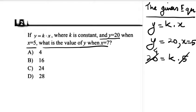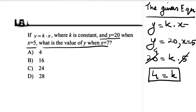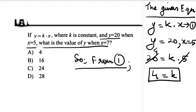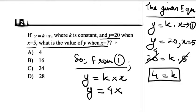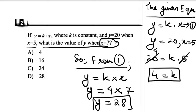5 times 4 is 20, so 4 is equal to k. Now we need to plug in this k value into the first equation. From equation 1: y is equal to k into x, that means y is equal to 4 and the value of x is given as 7. So that implies y is equal to 28. That's your correct answer.